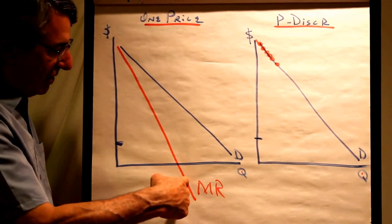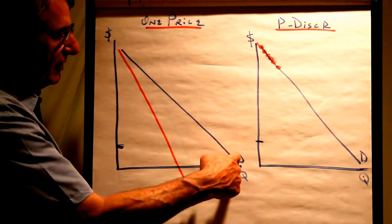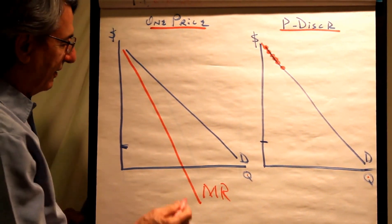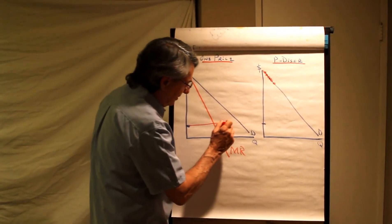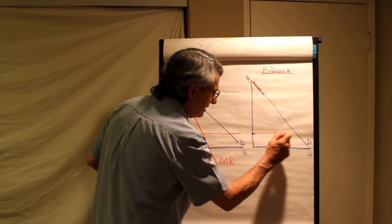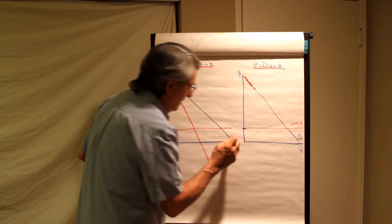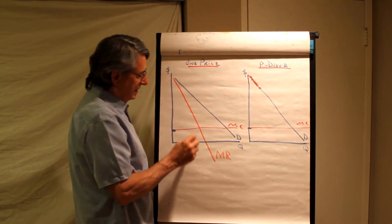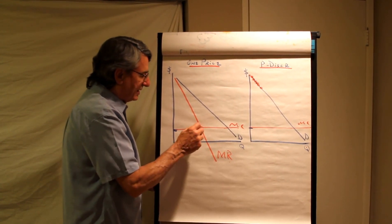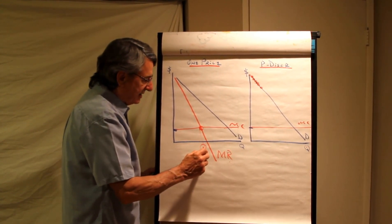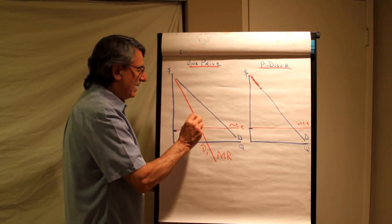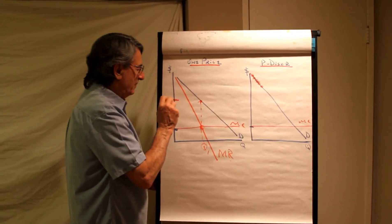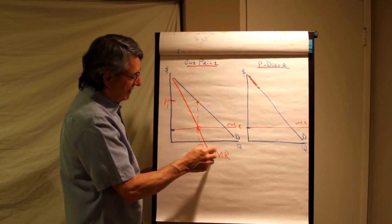With one price, no price discrimination, marginal revenue has twice the slope of the demand curve. And if we get a marginal cost curve here, let's make it both the same. There's marginal cost and there's marginal cost. We would produce where marginal cost equals marginal revenue. This is the quantity and up to the demand curve for the price, P1, Q1.